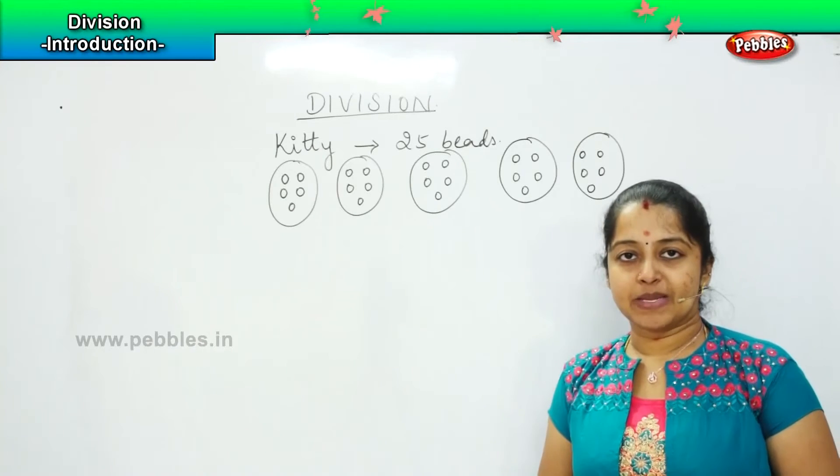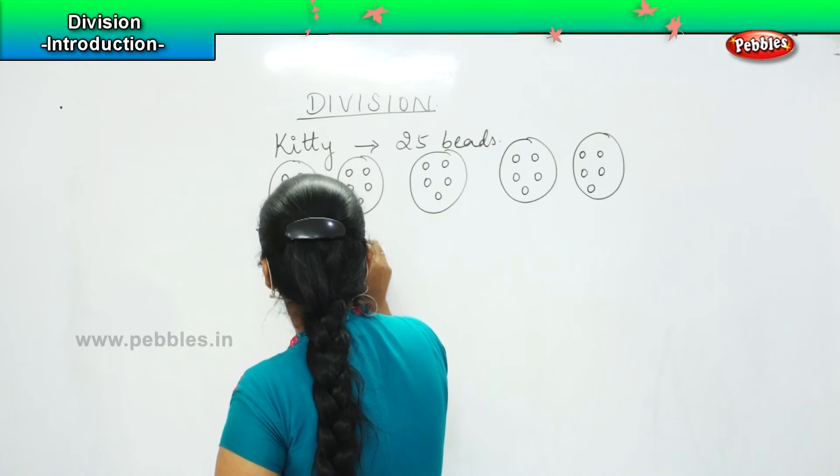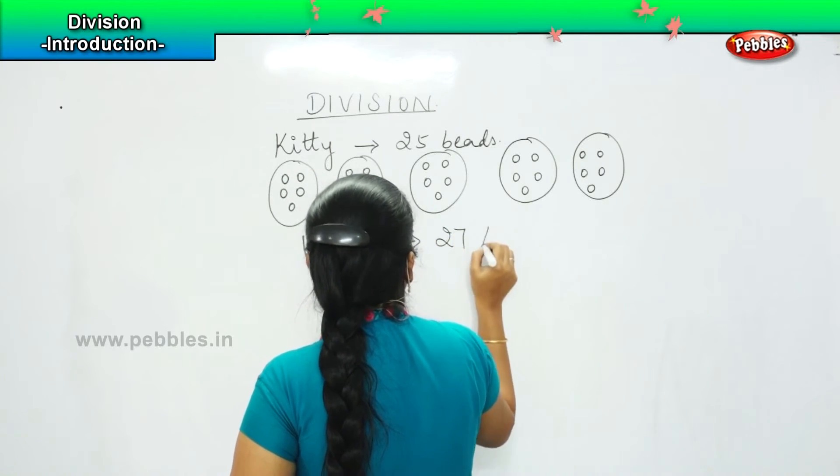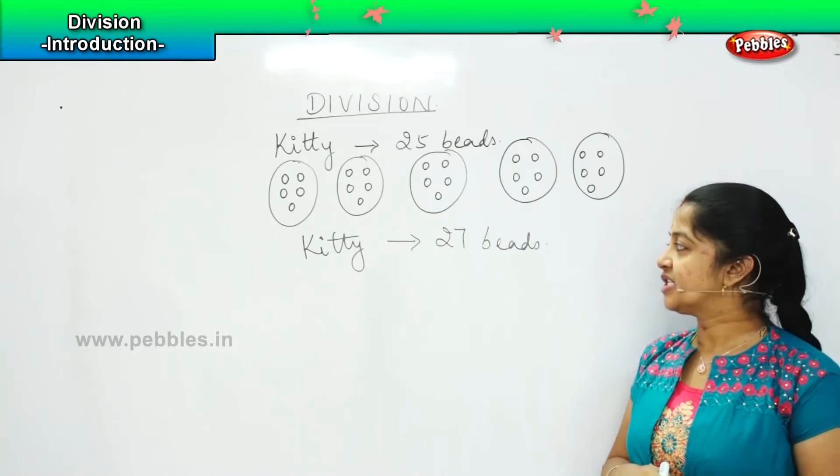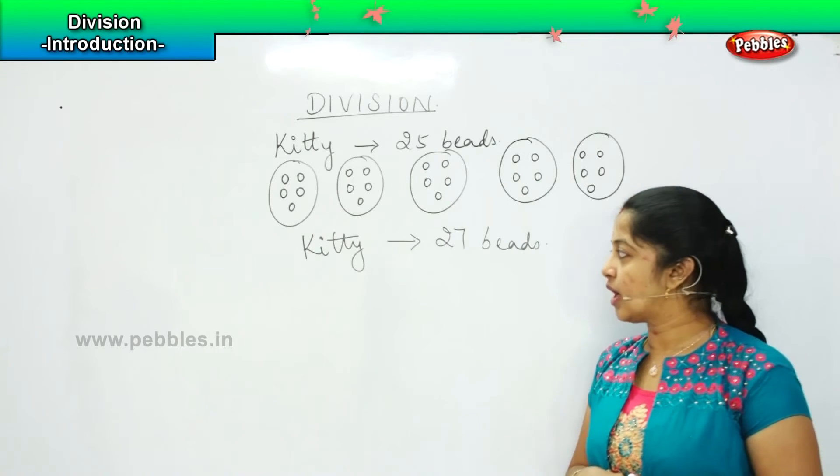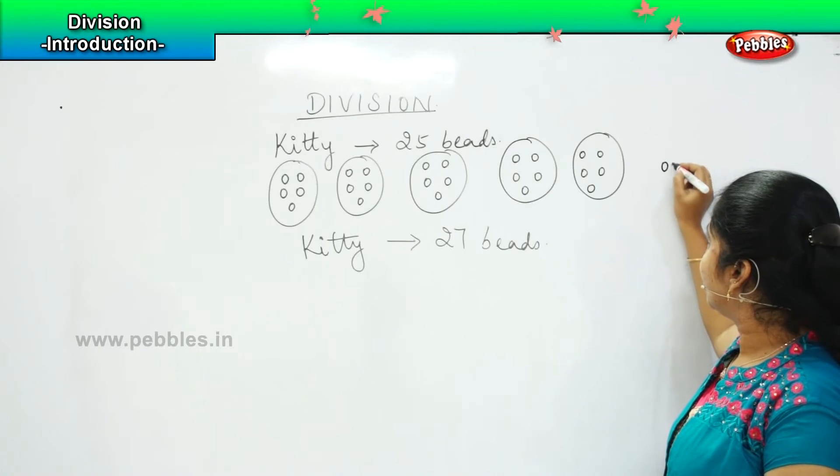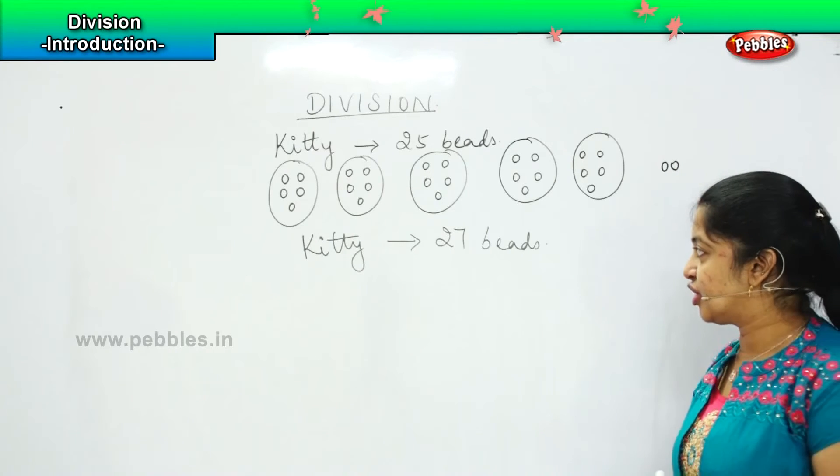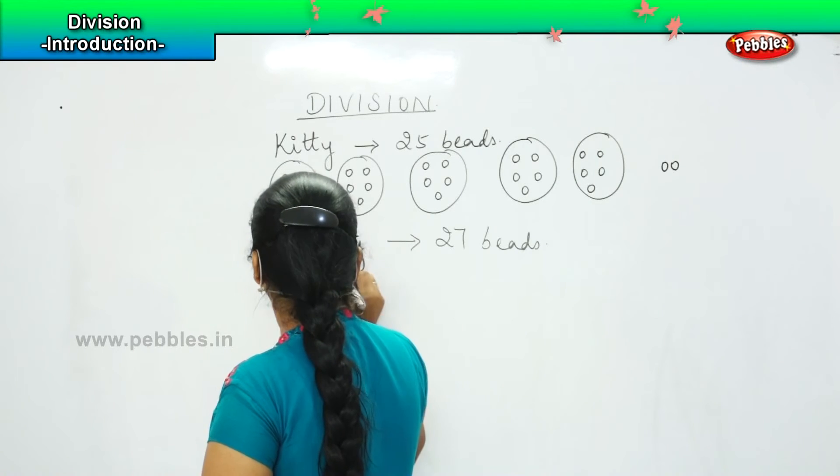So shall we see the same example again? Now assume that this girl Kitty has got 27 beads with her. Now what will she do? How can she divide 27 beads now? So what will she do now? If this is how she is dividing, then there will be 2 beads left alone. Otherwise, what she can do is she will be splitting it in the group of 3.